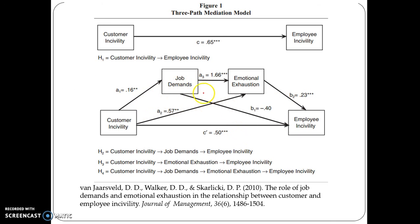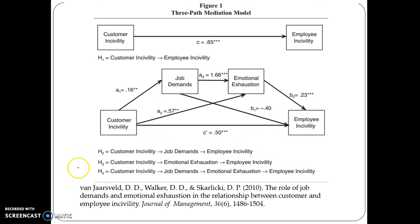Before interpreting the results, let's look at the hypotheses developed in this paper. Based on Hayes' mechanism or procedure, we will have to develop four hypotheses for testing the three-path mediation effect. The first is the total effect hypothesis: customer incivility is related to employee incivility (H1). H2 represents customer incivility on job demand, and job demand on employee incivility — job demand is mediating the relationship between customer incivility and employee incivility.